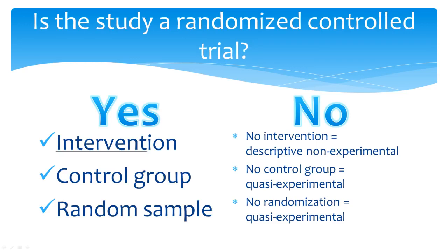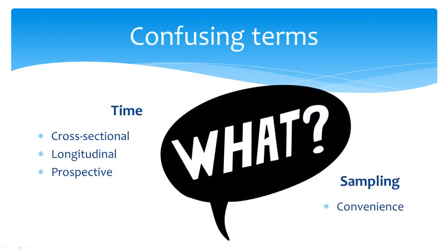If your study has a random sample, control group, and intervention, then it is a randomized controlled trial. Sometimes students are confused about the study design because of the terms that relate to the length of time the study was conducted or the sampling process. While these terms do relate to study designs, they are not broad enough to represent the methodology of the study and therefore do not give enough information to the reader about the study design.